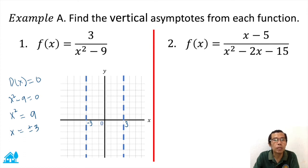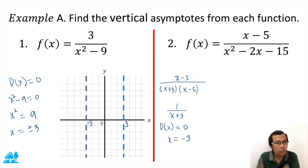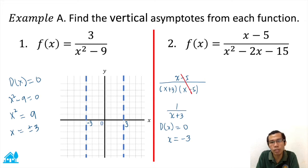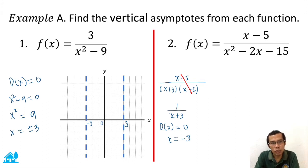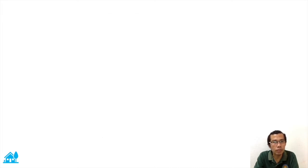Number two: (x minus five) over (x squared minus two x minus 15). First, we factor the trinomial: (x + 3)(x − 5). We can see a common factor of (x − 5) in the numerator and denominator, which simplifies to one over (x + 3). Therefore, our vertical asymptote is x equals negative three, shown on the graph.